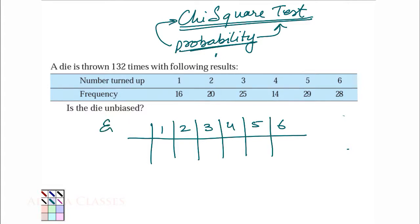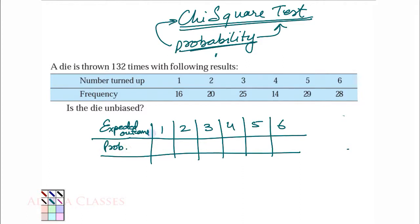We expect to get 1, 2, 3, 4, 5, or 6 as mentioned in the question. What will be the probability of getting 1? That is a very easy question. The probability of getting a 1 when you roll a die is 1/6. The probability of getting a 2 is also 1/6, because there are 6 possible outcomes and we are talking of only one outcome at a time. So the probability of getting any of these outcomes is 1/6.